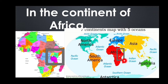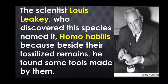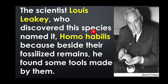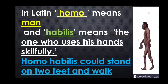In the world map, you can see the area where the skilled man's species were found. The scientist Lewis Leakey, who discovered this species, named it Homo habilis, because besides their fossil remains, he found some tools made by them. In Latin, Homo means 'man', and Homo habilis means 'the one who uses his hands skillfully'.